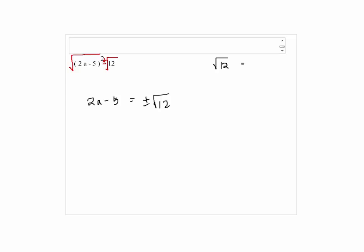The radical 12 could be written as the radical 4 times 3, which is the same as 2 radical 3. So we have 2a minus 5 equals the plus minus 2 radical 3.